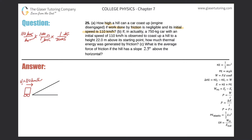So 110 times 1000 divided by 3600 gives us about 30.6 meters per second. That is the initial velocity: 30.6 m/s.